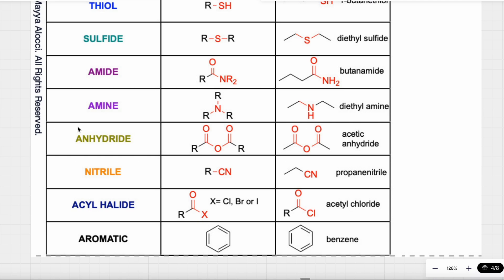Next, anhydride. An anhydride is when I have a C double bond O next to an oxygen next to another C double bond O. In this functional group, we have two carbonyl groups — two C double bond O groups — with an oxygen in between them. We can recognize this functional group here. This specific example is called acetic anhydride.